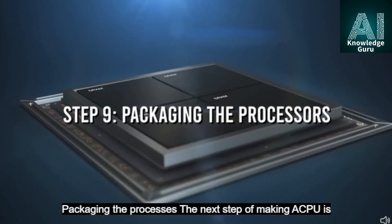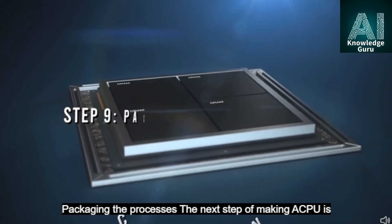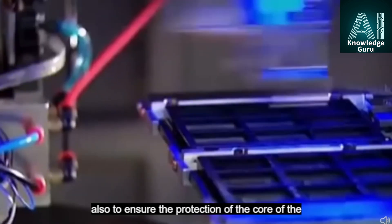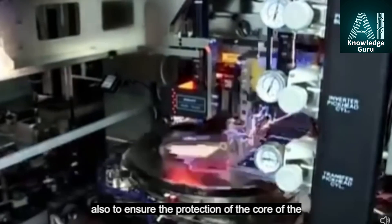Step 9: Packaging the processors. The next step of making a CPU is its packaging. The packaging is not only needed for decorative purposes, but also to ensure the protection of the core of the CPU.